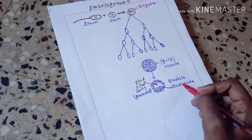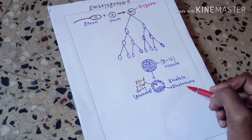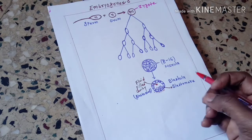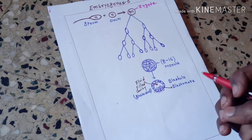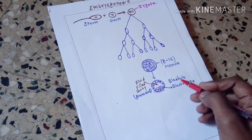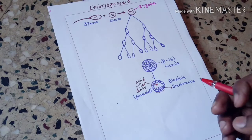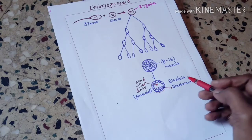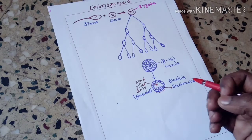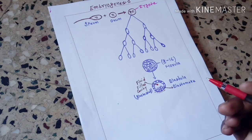Further, this blastula migrates towards the uterine wall and then gets embedded into the wall of the uterus. This process of attachment of the blastula or blastocyst to the wall of the uterus is called implantation.